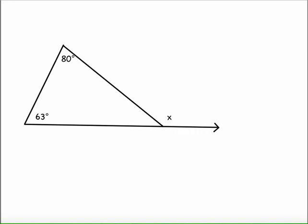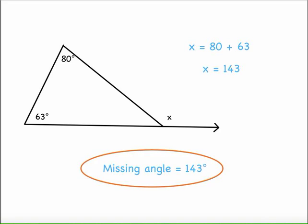So let's take a look at some actual triangles with measures and see what happens. Again, this angle right here is the adjacent angle to X. But 80 and 63 are the non-adjacent angles. So if I add those two angle measures together, that's going to equal my exterior angle measure. So my exterior angle is 143 degrees.